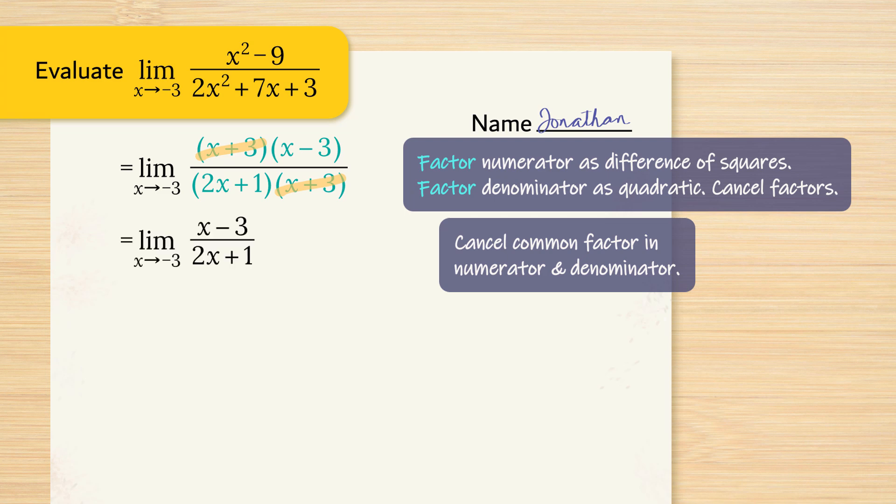If we mentally substitute in x equals negative 3, we no longer have an indeterminate form. We don't have a 0 over 0. That means we can actually substitute the limit now to get our answer.